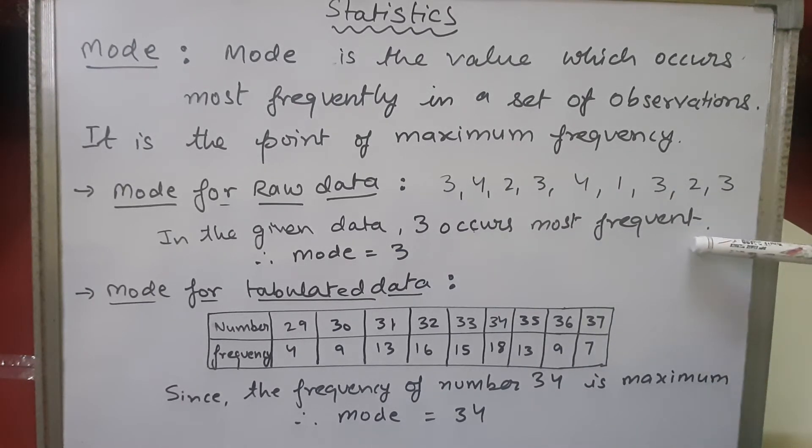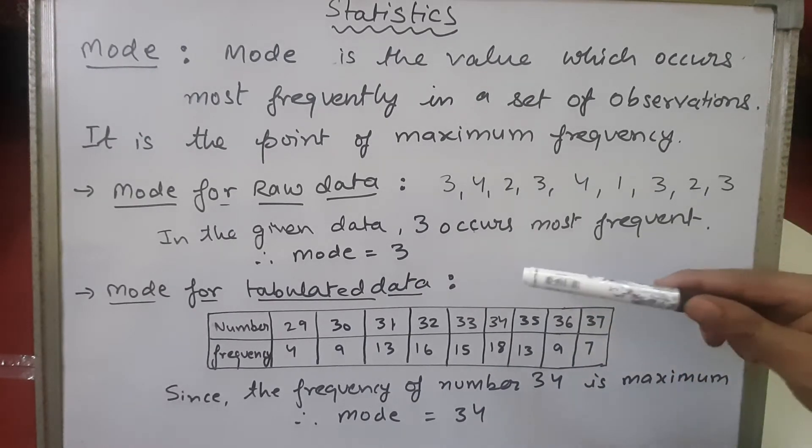In the given data, three has appeared maximum number of times. That means three occurs most frequently. Then we can say that the mode will be 3. Let's see the mode for the tabulated data.